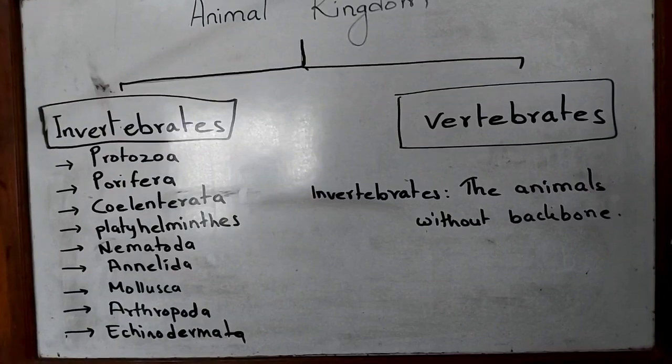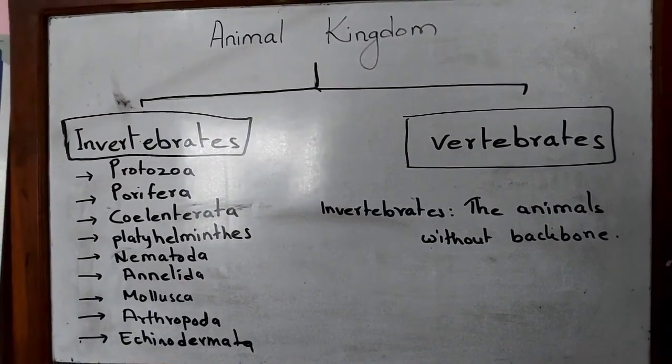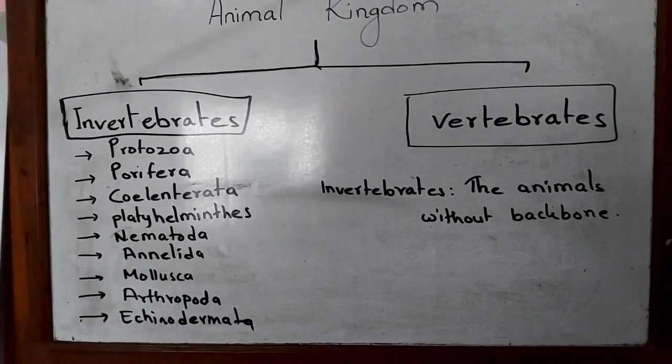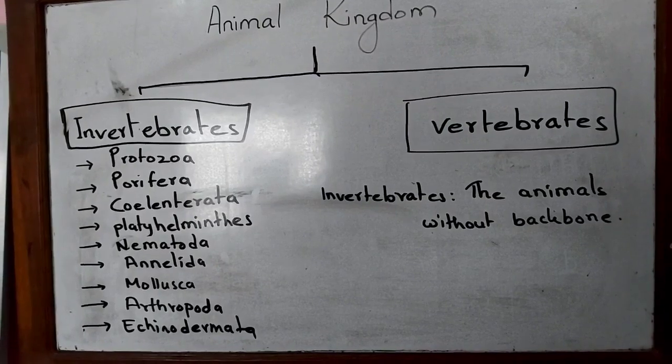Hello everyone, today I am here with my new video for Grade 5. In the last video, I talked about healthy food. Today we will be discussing the animal kingdom. As you can see, there are many animals around us — do you think they are similar or different? We see many kinds of animals around us, and they are different from one another on the basis of their characteristics.